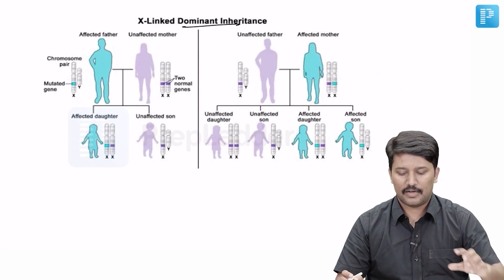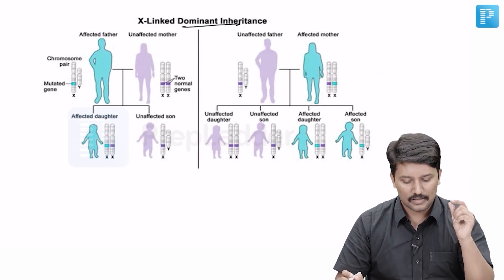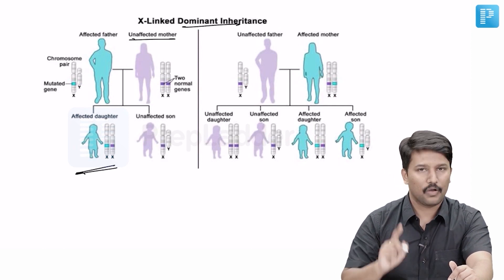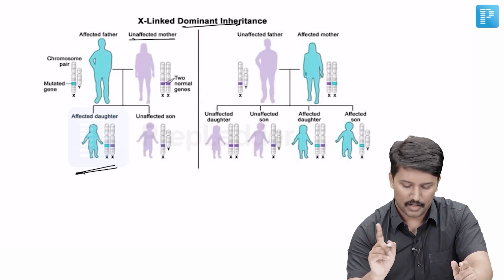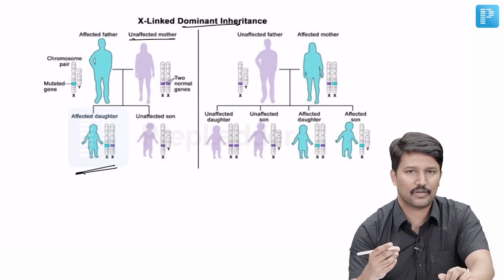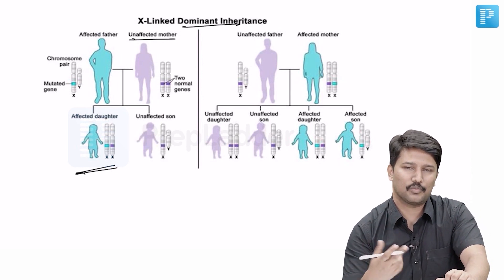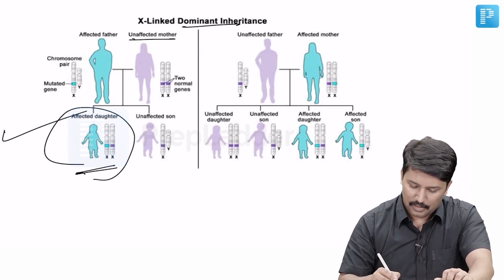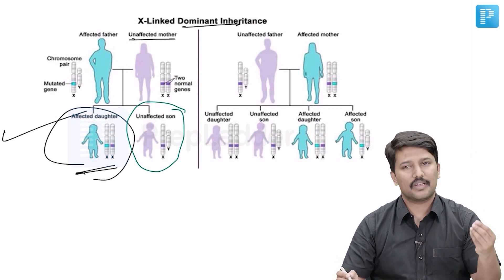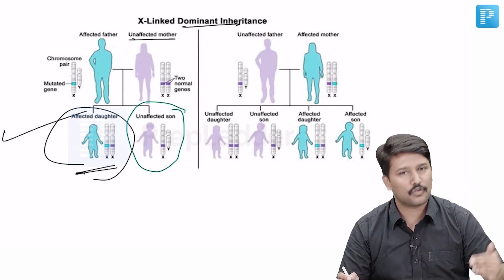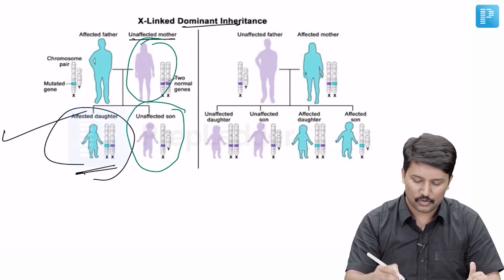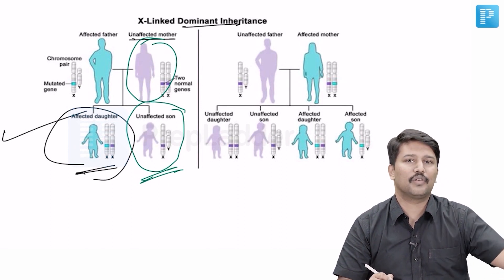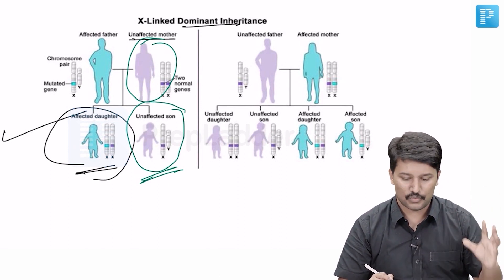In X-linked dominant inheritance, let us take two hypothetical situations. In the first, the father is affected and the mother is unaffected. For daughters, one X chromosome comes from the mother and one from the father; because it is a dominant disorder, the father's affected X chromosome manifests as disease, so daughters are affected. But the son remains unaffected because he gets his X chromosome from the unaffected mother and his Y chromosome from the father. So the rule that father does not transmit X-linked disease to son holds good in the dominant setting.